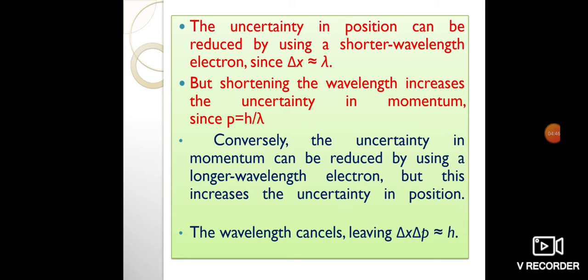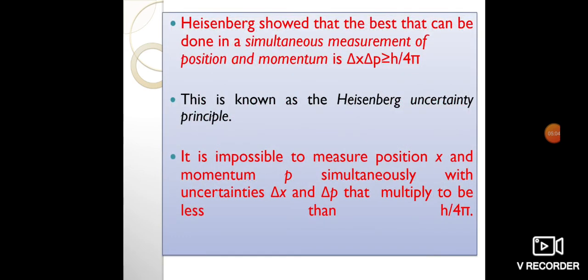It shows the product of the uncertainty in position and the uncertainty in momentum is nearly equal to Planck's constant value. Heisenberg showed that the best that can be done in simultaneous measurement of position and momentum is ΔxΔp ≥ h/4π. The product of the uncertainties can never be smaller than h/4π. This is known as the Heisenberg's uncertainty principle.